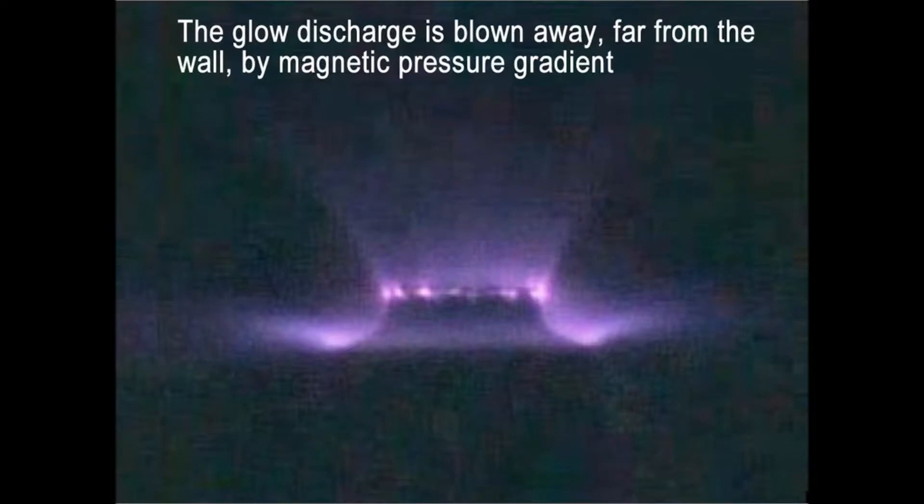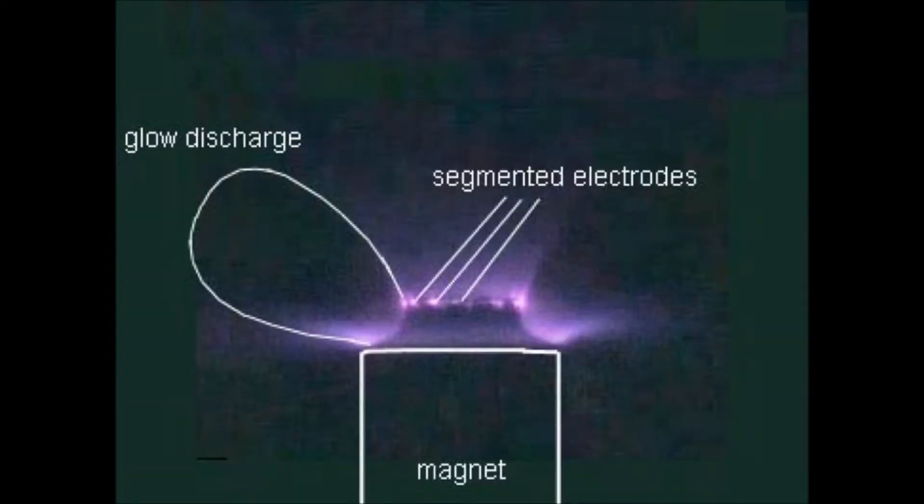And that's exactly what you can see in this picture. Because here, you have the electrodes, a segmented electrode in B at the top and a continuous electrode in A. And here, you can see the characteristic pattern of the discharge. So we wanted to keep this discharge close to the wall.